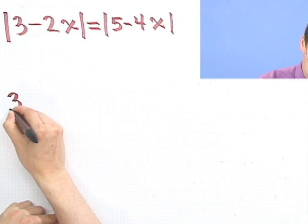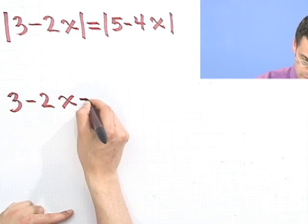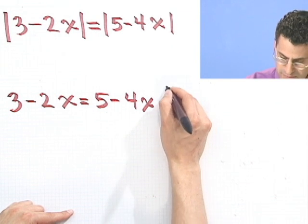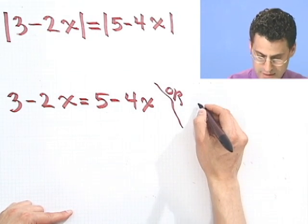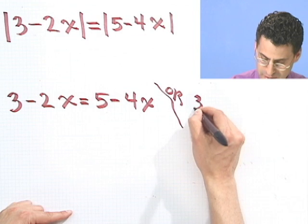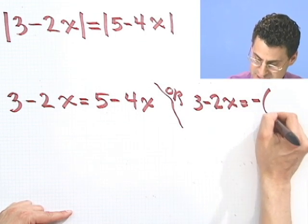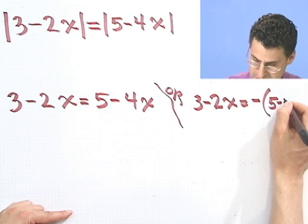One of them looks like this: 3 minus 2x equals 5 minus 4x. And then the other one is similar: 3 minus 2x equals negative of 5 minus 4x.